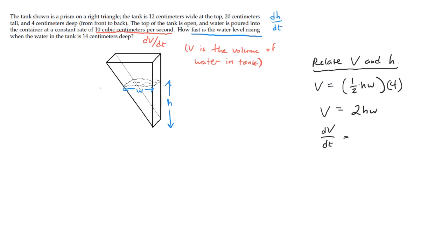On the right side, the thing we have to keep in mind is that we have 2 times h times w, and h and w are both varying with respect to time. That means that we need to use the product rule here, because we have a product of two functions, both of which are changing. So that's going to be 2 times, and then the derivative of hw is going to be dh/dt times w, plus h times dw/dt.